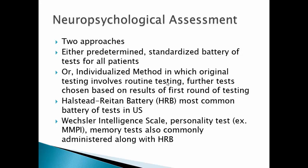There are two approaches to neuropsychological assessment. The more traditional approach uses a predetermined standardized battery of tests for all patients. A more individualized method gives the initial battery common to all patients and then conducts further testing based on those results. In the U.S., the Halstead-Reitan Battery (HRB) is the most common battery used, alongside the Wechsler Intelligence Scale, personality tests such as the Minnesota Multiphasic Personality Inventory (MMPI), and memory tests.